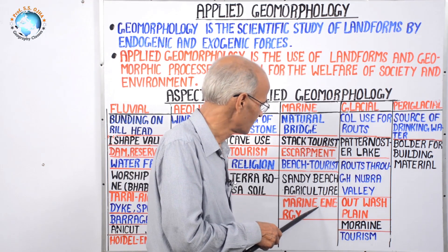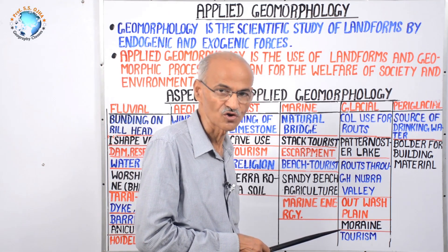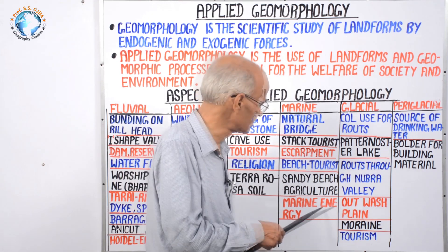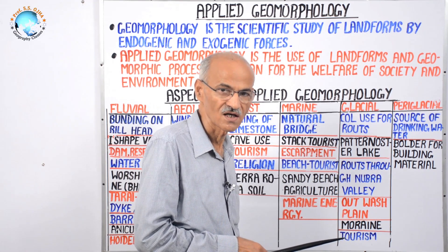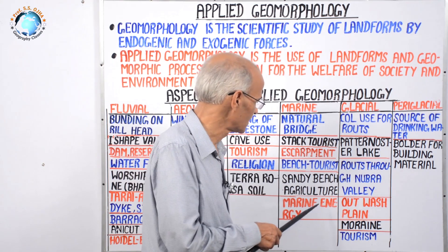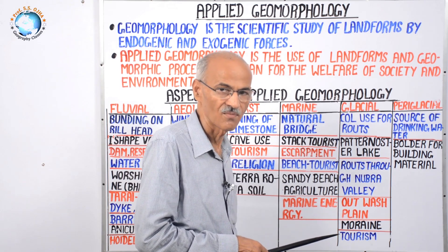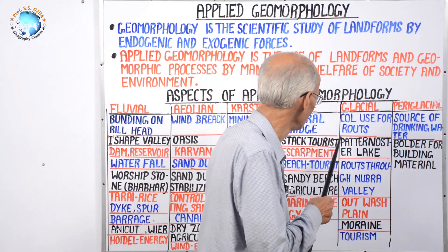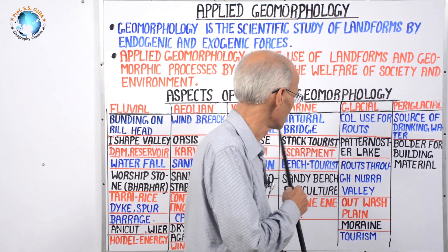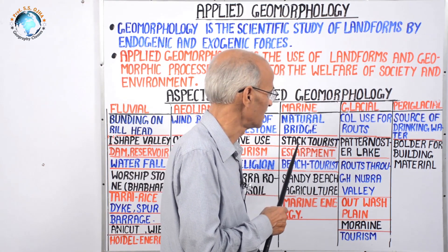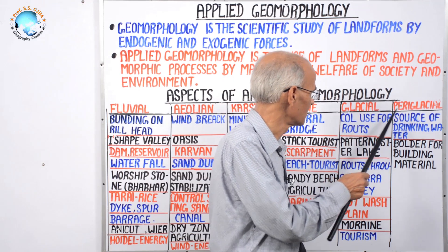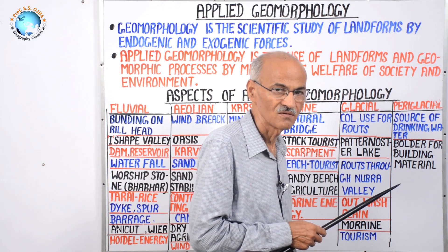However, because marine processes sculpt coastal landforms, if man harnesses that energy, wave speed will be controlled, erosion will decrease, and landform development will also decrease — that's why it may be considered in applied geomorphology. Now let us move to cold and cool areas where glacial and periglacial processes are at work.